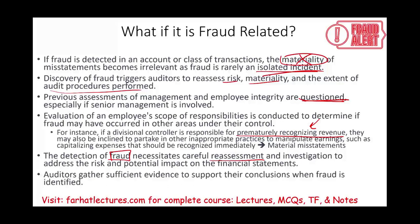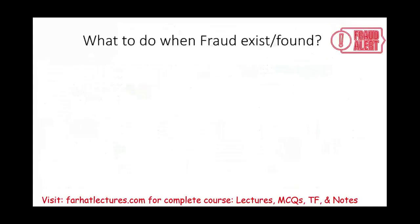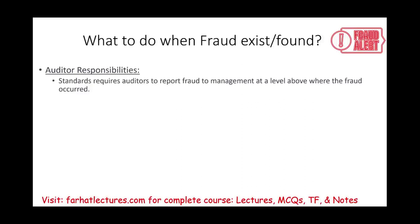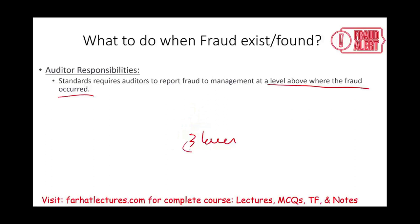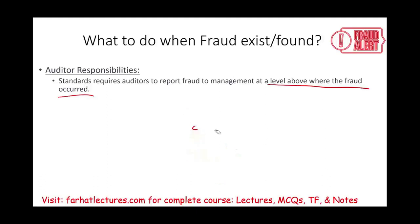The auditor will have to do more work to support their conclusion when there is fraud. What is the auditor's responsibility? You have to report the fraud to management at a level above where the fraud occurred. So if fraud happens at a certain level, you report it one level above — the higher the level of fraud, the higher up you report.